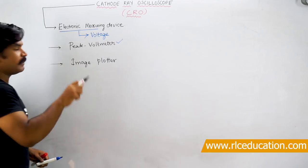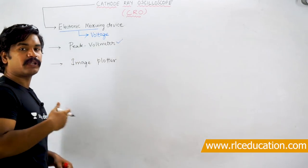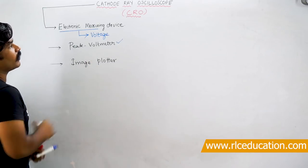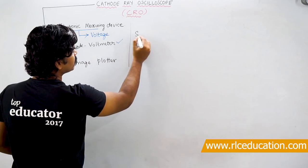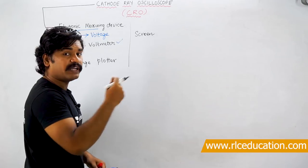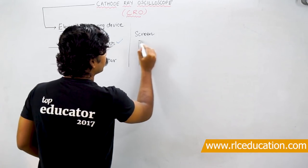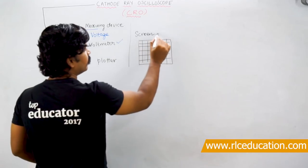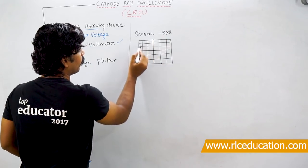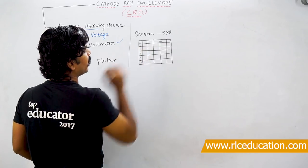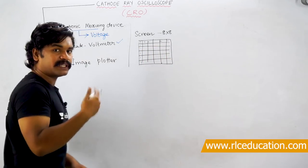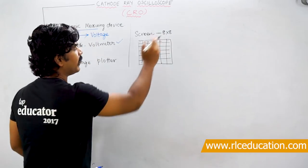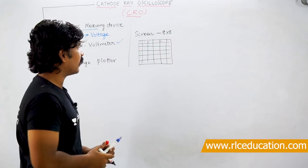A CRO is essentially an image plotter - it plots the image of the input voltage you are giving. Whether you give a DC voltage, an AC voltage, or a triangular voltage, that waveform will be displayed on the screen. The CRO screen is in the form of a graph, and in general a normal CRO screen will have an 8 by 8 size - eight divisions on each side.